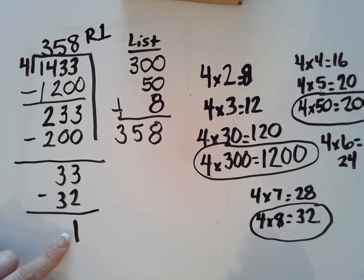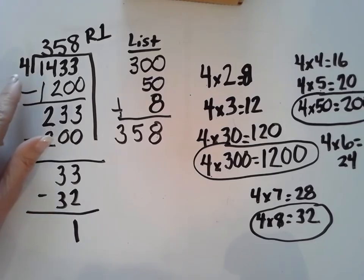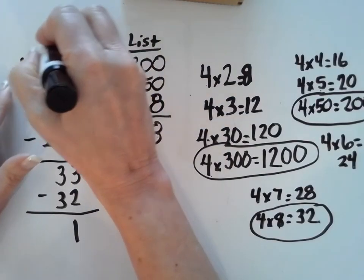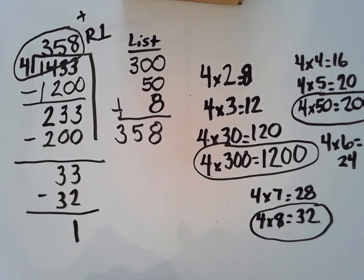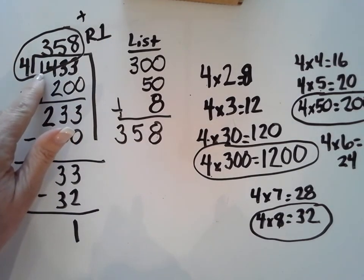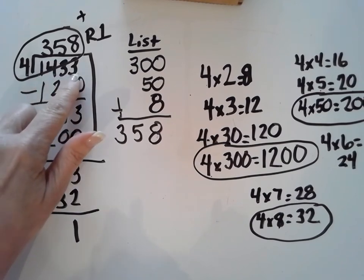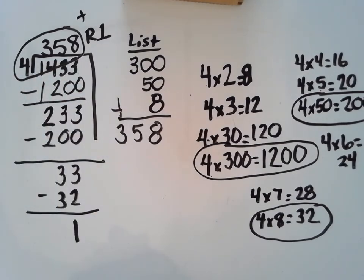All right, guys. Now, if I were to check this problem, I would multiply my divisor and my answer and then add the remainder at the end. And when I do that, it should give me that 1,433 to make sure that we have the correct answer.